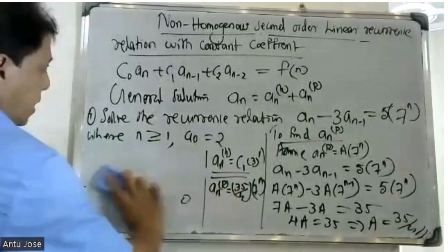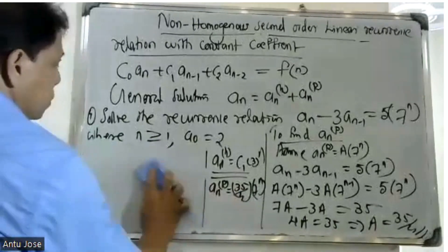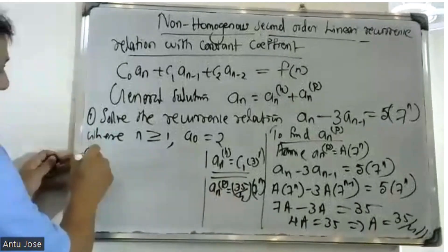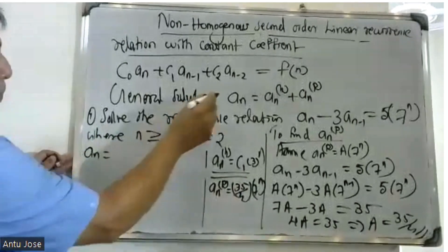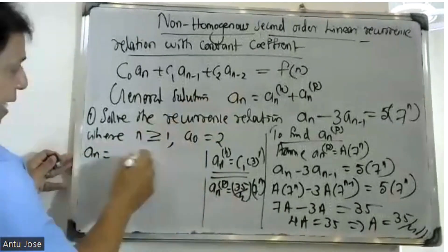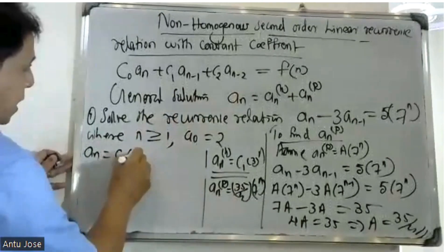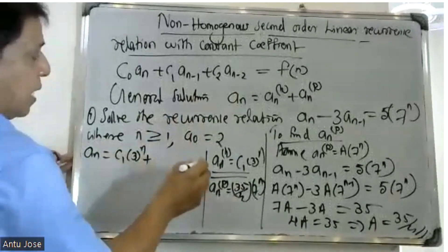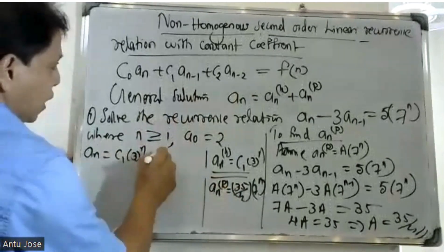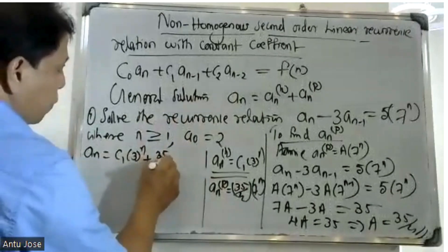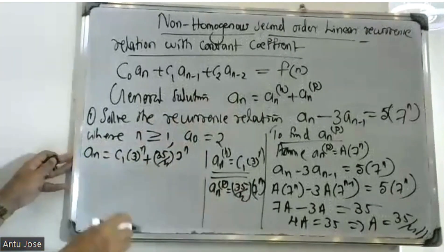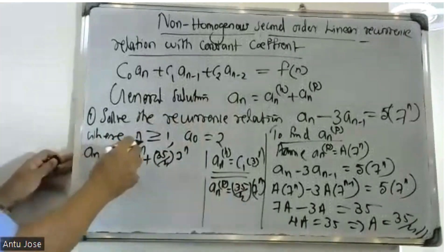The general solution is: a_n equals C1·3^n plus (35/4)·7^n. Now apply the boundary condition to find C1.